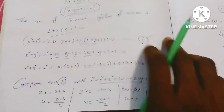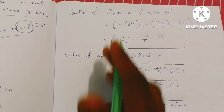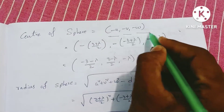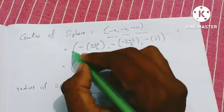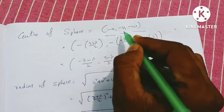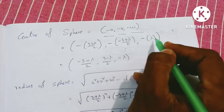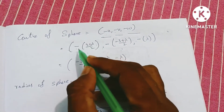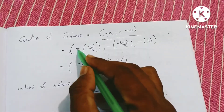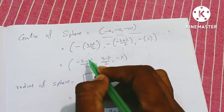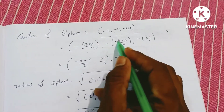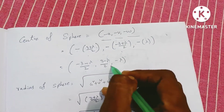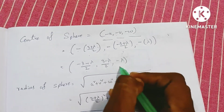Now let's use the center of the sphere formula, which is minus u, minus v, minus w. Substituting the u, v, w values: center equals minus (3 plus lambda) by 2, comma minus (minus 3 plus lambda) by 2, which gives (3 minus lambda) by 2, comma minus lambda.